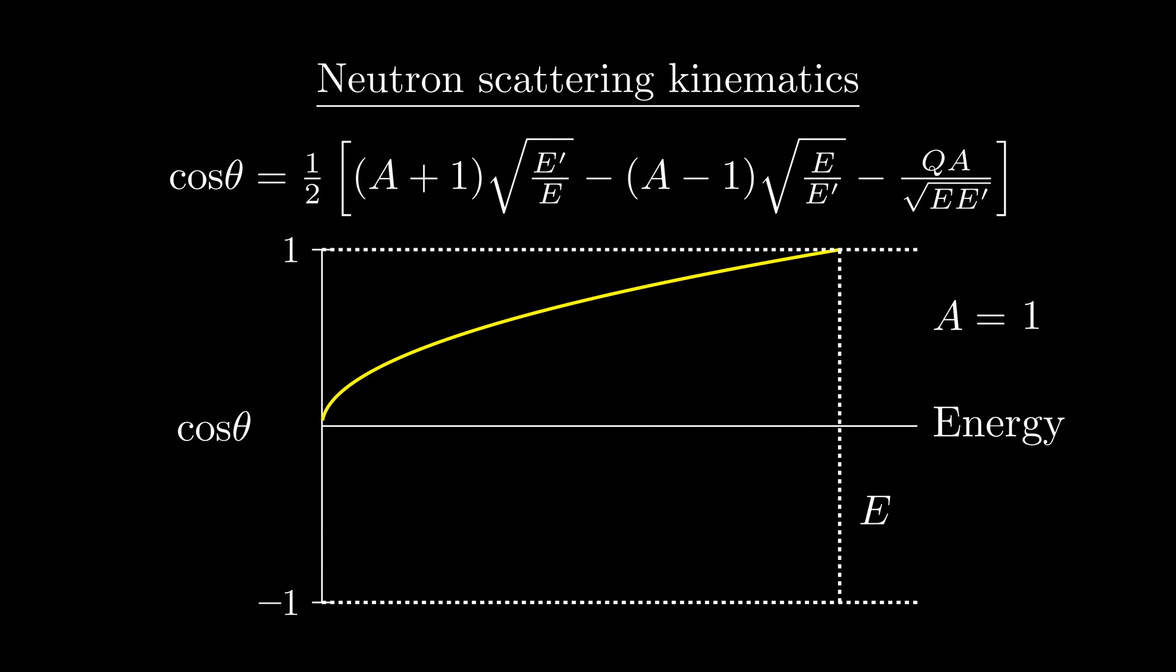As the scattering angle grows larger and the cosine decreases, we see that the neutron transfers more and more energy to the proton. Finally, there's the case where E prime is equal to 0. This corresponds to a scattering event where the neutron transfers all of its energy to the proton, and stops dead in its tracks.